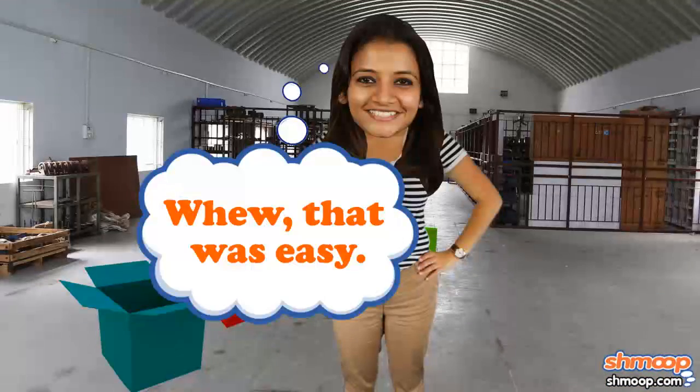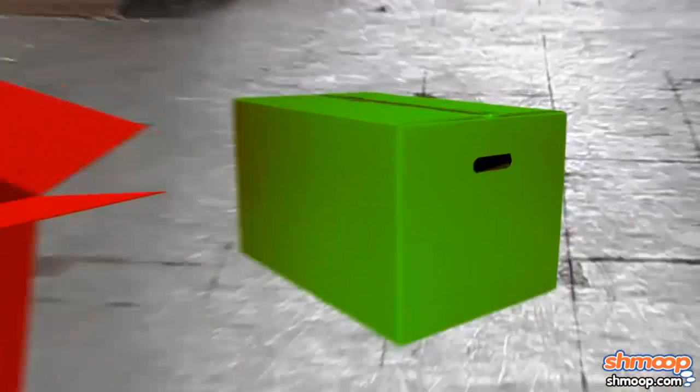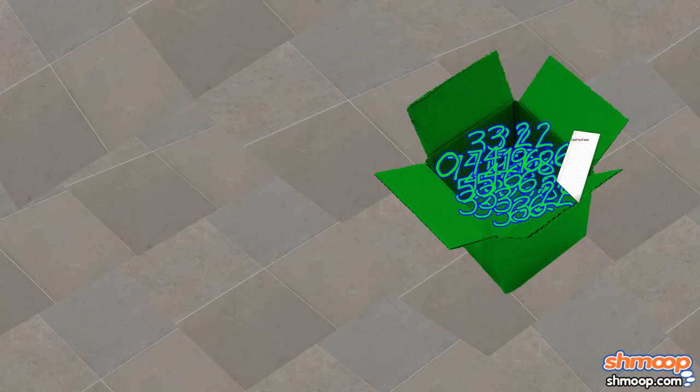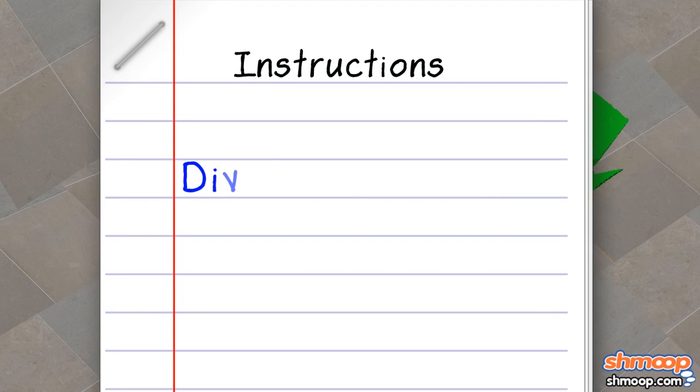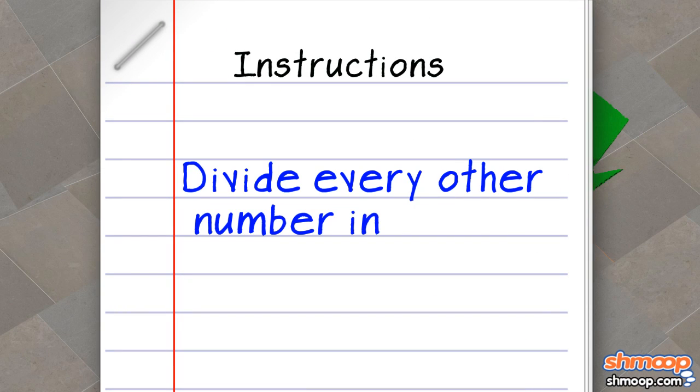She barely broke a sweat on that one. But then the dreaded green box. There are about 200 numbers in there, and what's this? A zero? Really? Included in the box are instructions that she should divide every other number in the box by that ugly little zero.